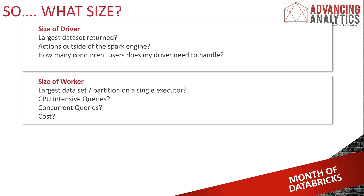Then there's the size of worker. Sizing individual workers increases what a single worker can do — you can fit a larger dataset or partition onto that single executor if you're doing heavy groups, sorts, and similar operations. CPU-intensive work benefits from having more CPU available. Concurrency is also impacted by the number of compute cores on each worker. One of the biggest factors is cost — getting more CPU by using a bigger and bigger VM is more expensive than having the same total CPU spread across lots of small workers, as there's an exponential rise in VM cost at larger sizes.